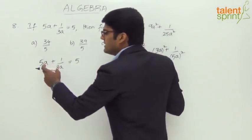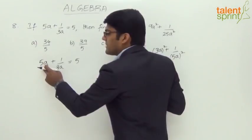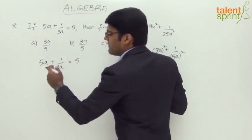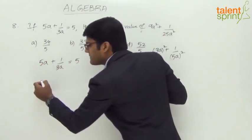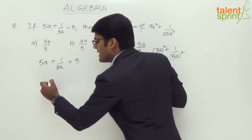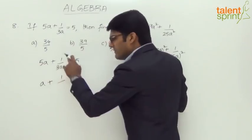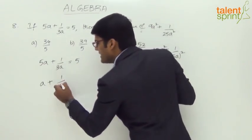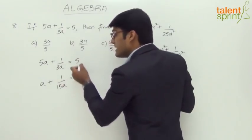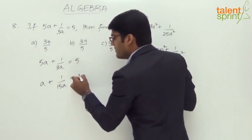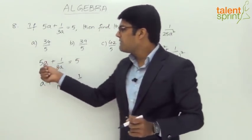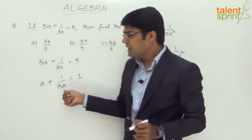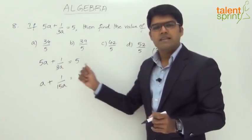So we want it to be 3a here. So let's divide by 5. Let's divide both sides by 5. What do we get? 5a by 5 will be equal to a plus 1 by 3a by 5, which is nothing but 1 by 3a into 5. So 1 by 15a equals to, we are dividing by 5, so 5 by 5 will become 1. Are you able to follow? 5a by 5 is a, 1 by 3a by 5 will become 1 by 15a. 5 by 5 is 1. So dividing both the sides by 5.